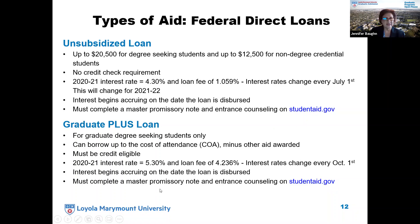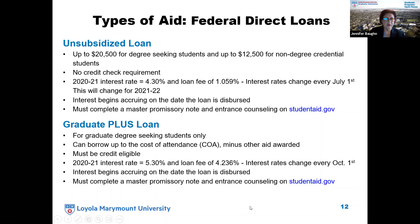Another type of loan available to graduate degree-seeking students is the Graduate PLUS loan. For this loan, you can borrow up to the cost of attendance minus any other aid you've been awarded. You must be credit-eligible to be approved. For the 2021 academic year, the interest rate is 5.3% and the loan fee is 4.236%. Interest rates change every October 1st for the Grad PLUS loan. You must also complete entrance counseling and a master promissory note — each loan has its own — both of which can be completed on studentaid.gov.